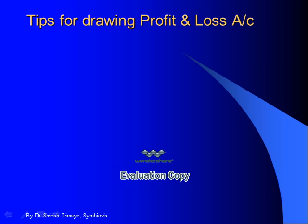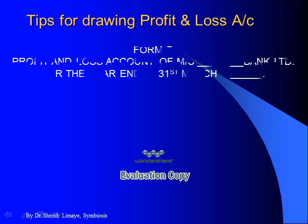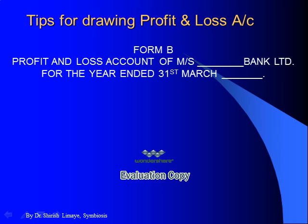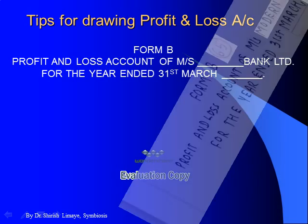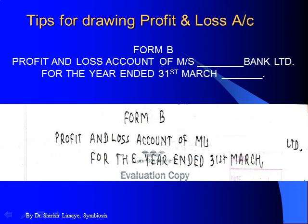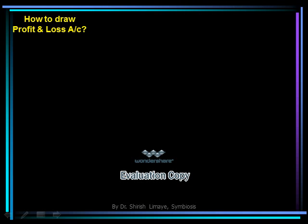The title of the profit and loss account is Form B — Profit and Loss Account of [name of bank] for the year ended 31st March [year]. Like the title of the balance sheet, the title of the profit and loss account is also recorded in the upper margin above the red line on your notebook.